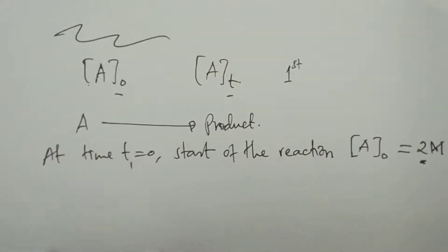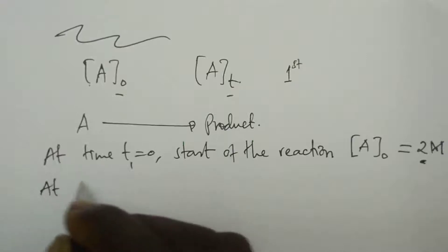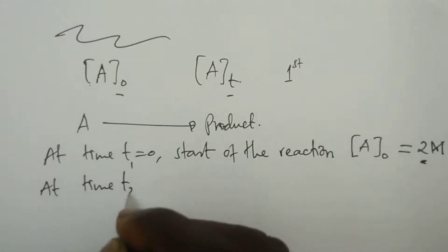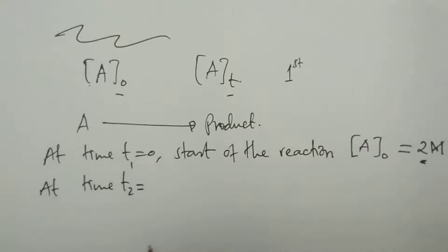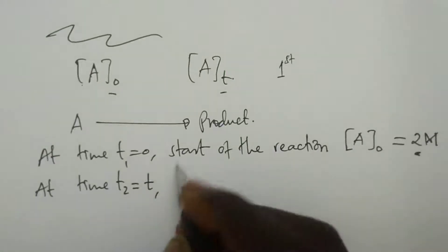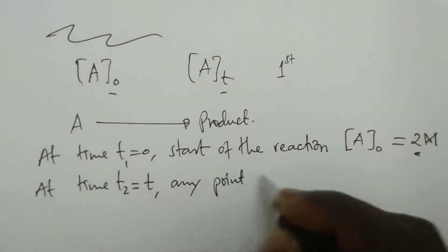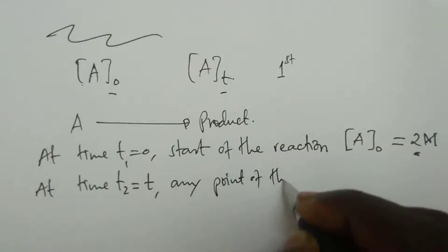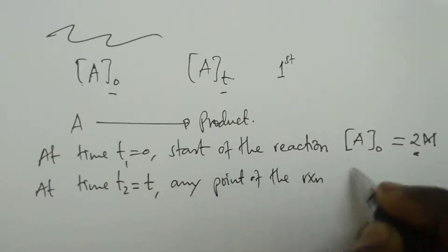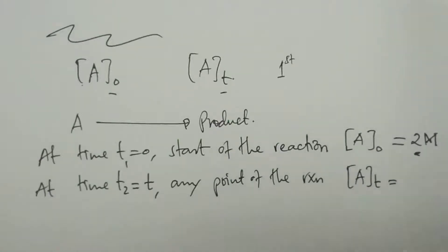As the reaction continues to increase, to proceed, the product continues to increase. So, time T₁ is zero. Then, we'll say at time T₂, which is the same as time T. Time T₁ is zero and then time T₂ is T. Here is any point at the reaction. Any point of the reaction. We have another concentration, concentration Aₜ. Concentration Aₜ can be any amount X.